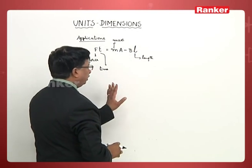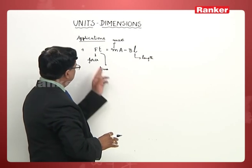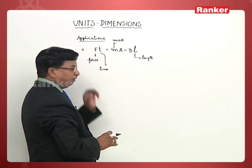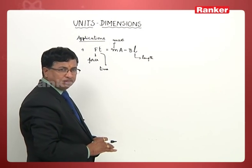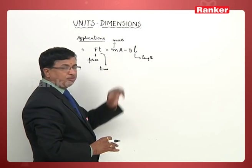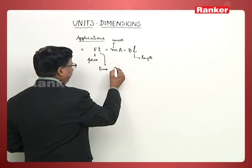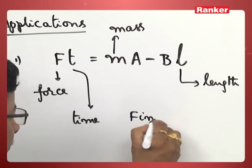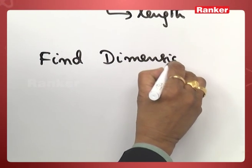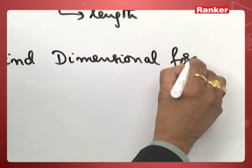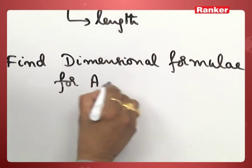What is what out of that one? He has mentioned few quantities out of the given equation. F is given as force, t is given as time, l is mentioned as length, and m as mass. He has not given any sort of mention about a and b. Now, the question is find dimensions or dimensional formulae for a and b.